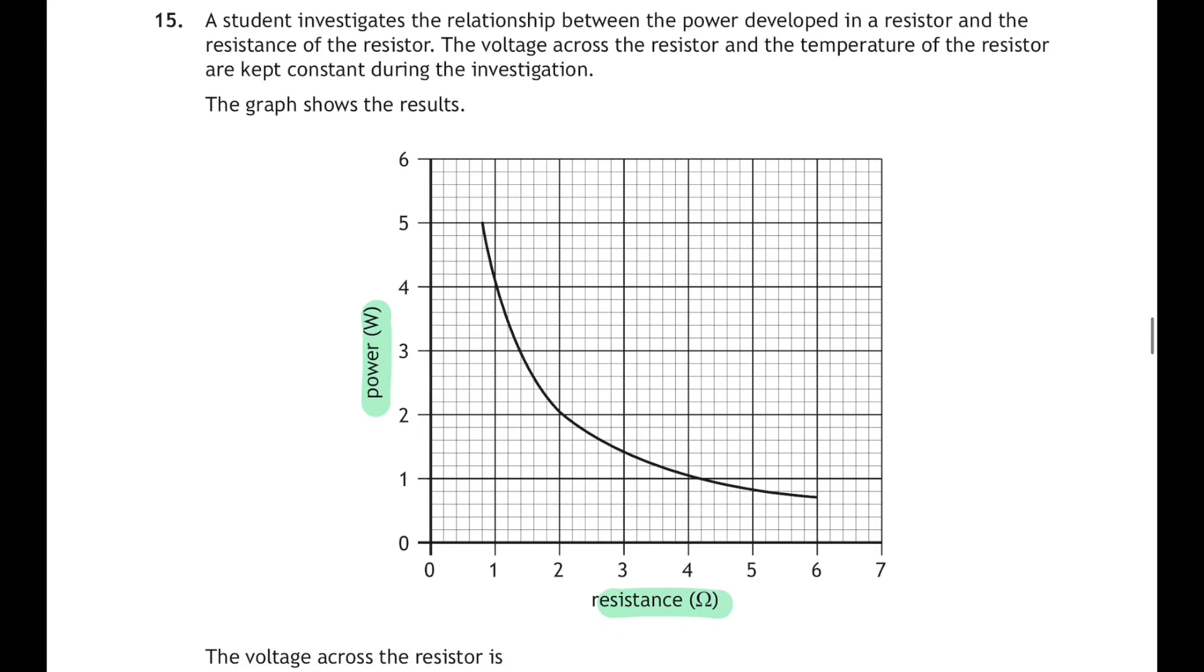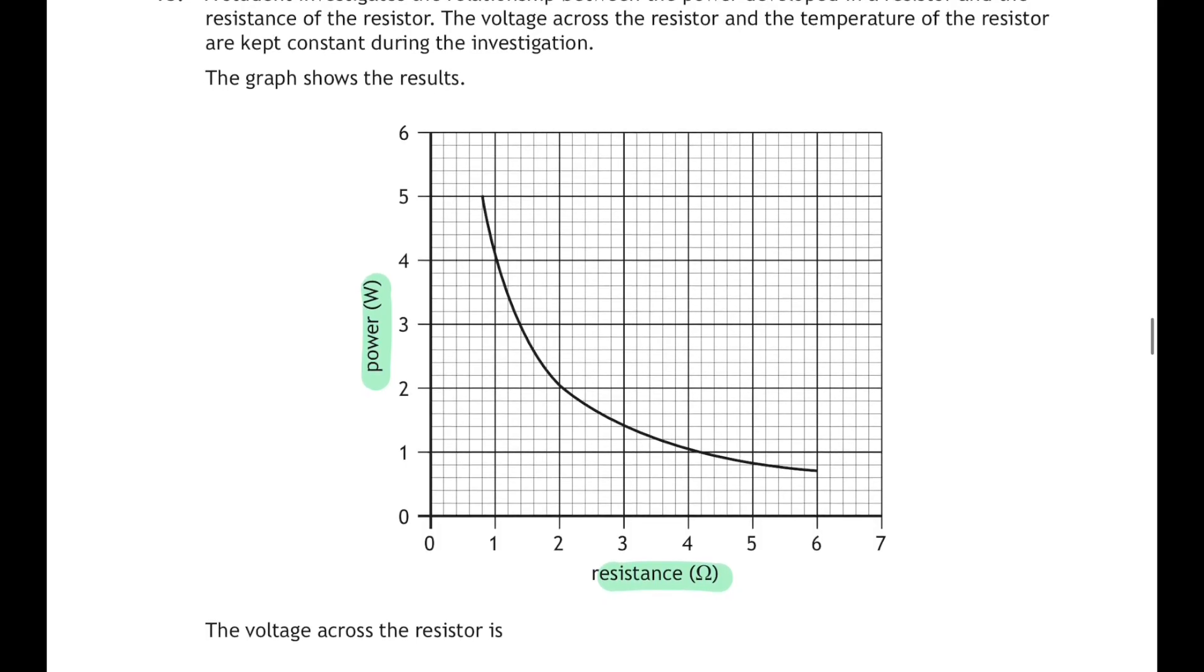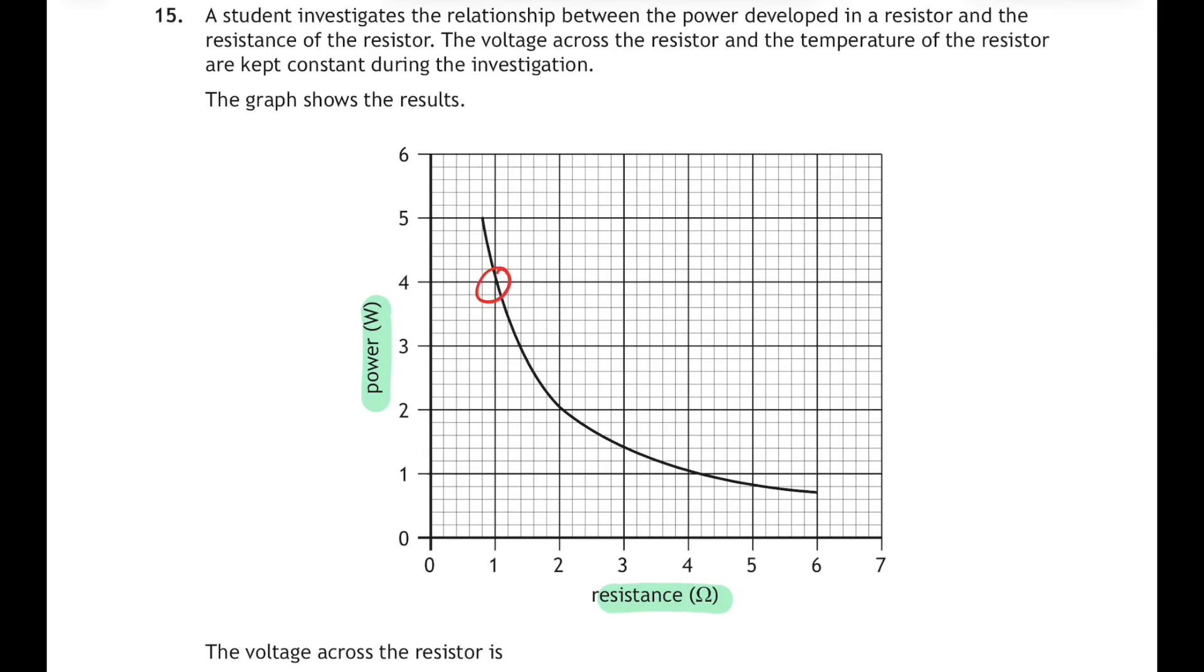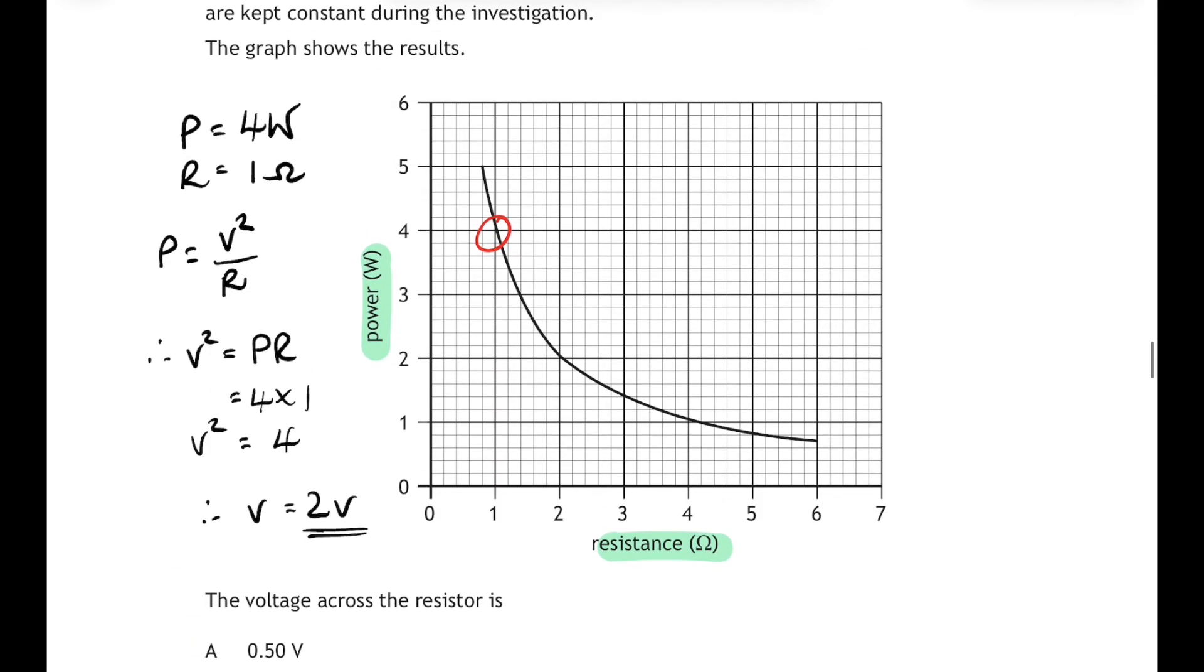Right, last one for this video. Question 15: a student investigates the relationship between the power developed in a resistor and the resistance of the resistor. And the voltage across the resistor and the temperature of the resistor are kept constant during the investigation. And the graph shows the results. We've got power on the y-axis, resistance on the x-axis, and we have to determine the voltage across the resistor. Now we can do that by picking any point on that graph. So let's just circle a point here, and if we read off the corresponding power and resistance—so the power is 4 watts when the resistance is 1 ohm—then we can use the relationship P equals V squared over R. Rearrange it so V squared equals P times R, and then 4 times 1 gives us V squared is equal to 4. So the voltage is equal to 2 volts, and that corresponds to answer C. Now we could have done that with any point on the graph. Let's choose another point, and again, if we do P equals V squared over R and rearrange to find V, then we get the same answer: V equals 2 volts.